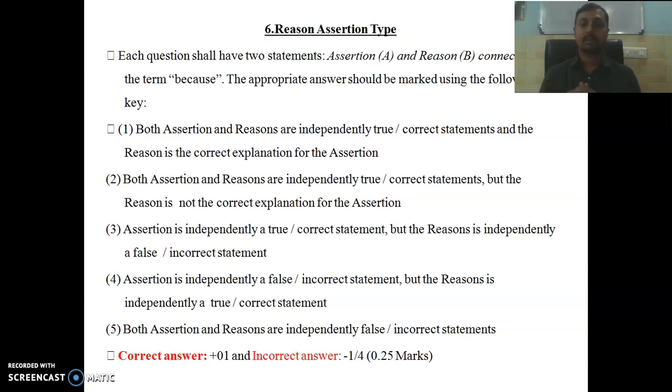Sixth, there is the reason assertion type. Here two statements will be given. They should be connected by the term because. In options we will have either the assertion is correct, reason is correct, both are correct, both are wrong, or they are either independently correct or wrong. If you get the correct answer you will get one mark. If you go wrong you will lose minus 0.25.